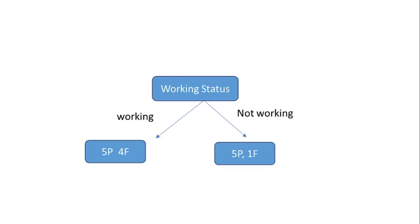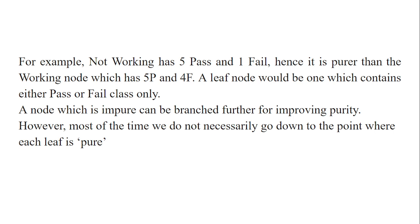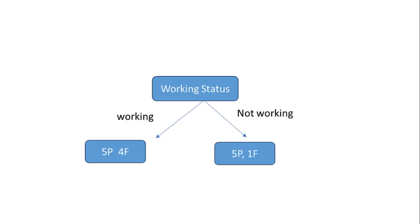If we decide on working status — working or not working — out of 9 working students, 5 pass and 4 fail. For the 6 not-working students, 5 pass and 1 fail. The not-working group is more pure in comparison to working, since only one failed out of six. A node which is impure can be branched further for improving purity.